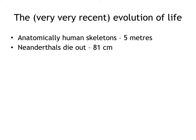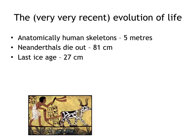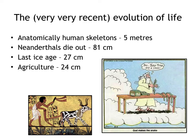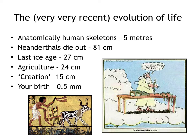81 centimetres from my desk, Neanderthals die out. 27 centimetres from my desk the last ice age took place; at 24 centimetres we get agriculture; and at 15 centimetres from my desk, this is where the Genesis creation story of the Bible is found. Your birth and entire lifespan is represented by the diameter of the lead of a propelling pencil — half a millimetre.